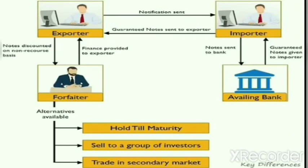In the process of forfeiting: the availing bank guarantees the notes given to the importer, and the notes are sent back to the bank. The exporter sends notification to the importer, who then guarantees the notes which are sent to the exporter. The notes are then discounted on a non-recourse basis, with finance provided to the exporter by the forfaiter. The forfaiter makes alternatives available such as holding the amount till the date of maturity, selling it to a group of investors, or choosing to trade in the secondary market. This involves the basic process of the forfeiting transaction.